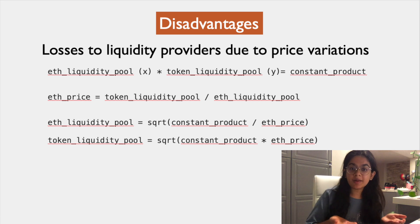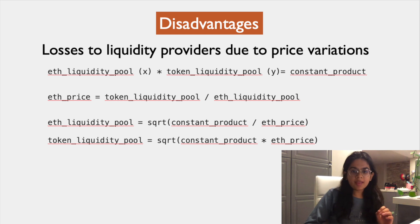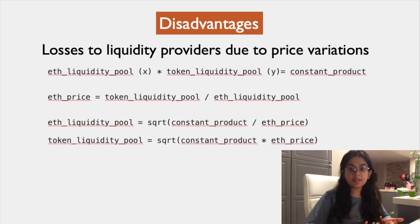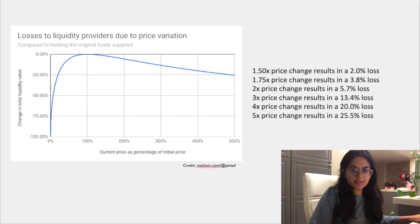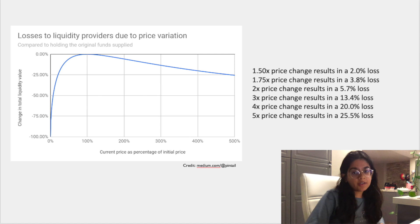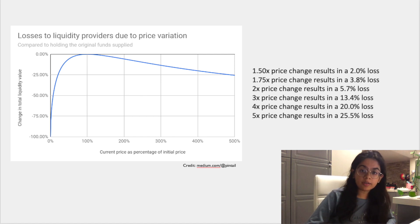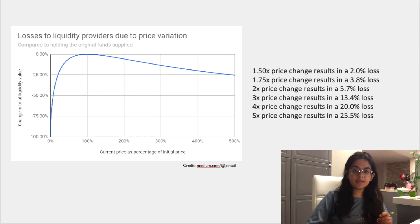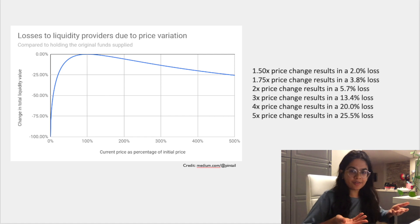Here's the disadvantage: if you have a pair like ETH and BTC and ETH goes up 50 percent relative to BTC, you would actually have a small loss. That loss could be less than the fees you've earned from the liquidity pool, but it's something you need to calculate. You can see in this graph that if the price changes five times, you would have a 25 percent loss. Only in very extreme situations would the loss exceed the fees received, and most of the time the market moves up or down together.